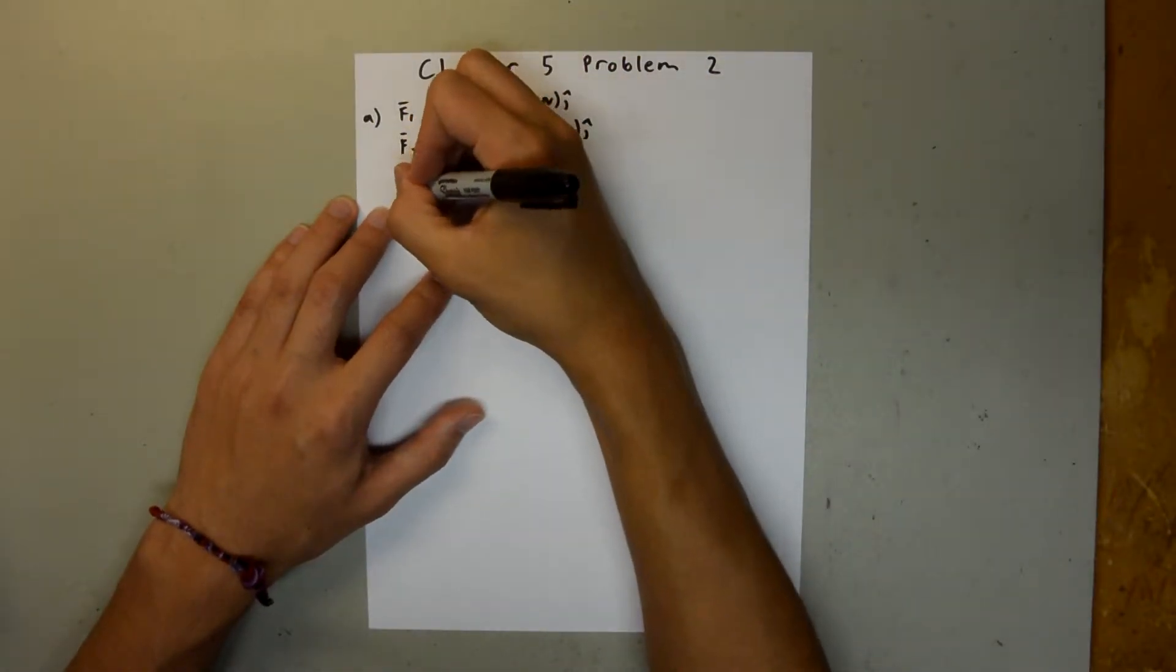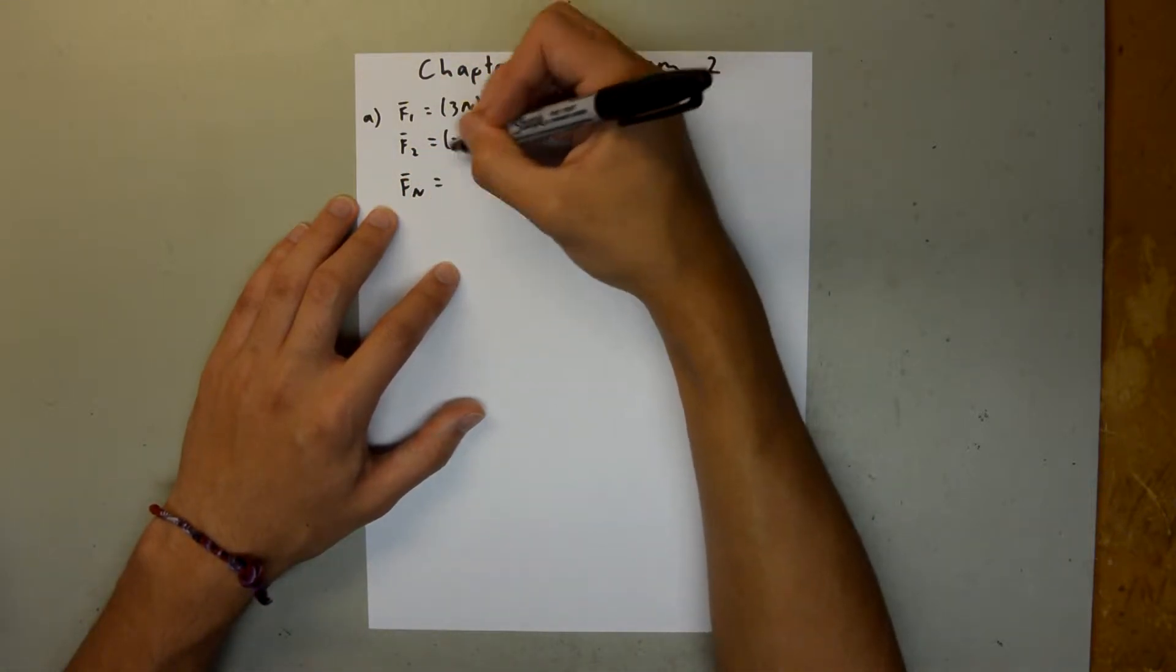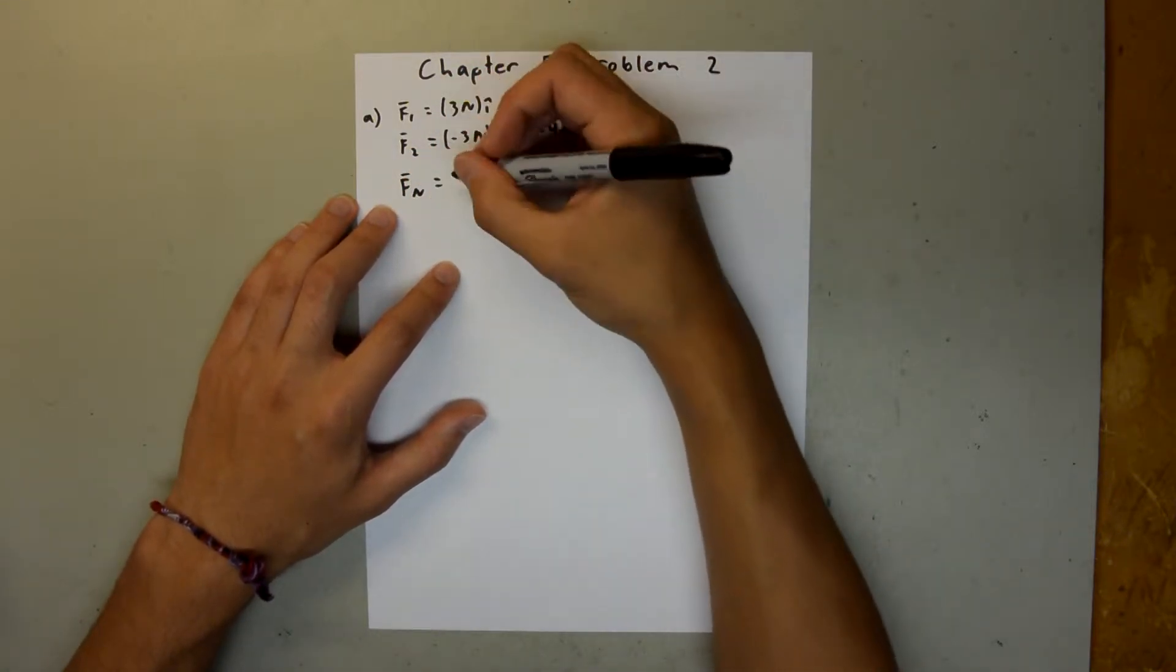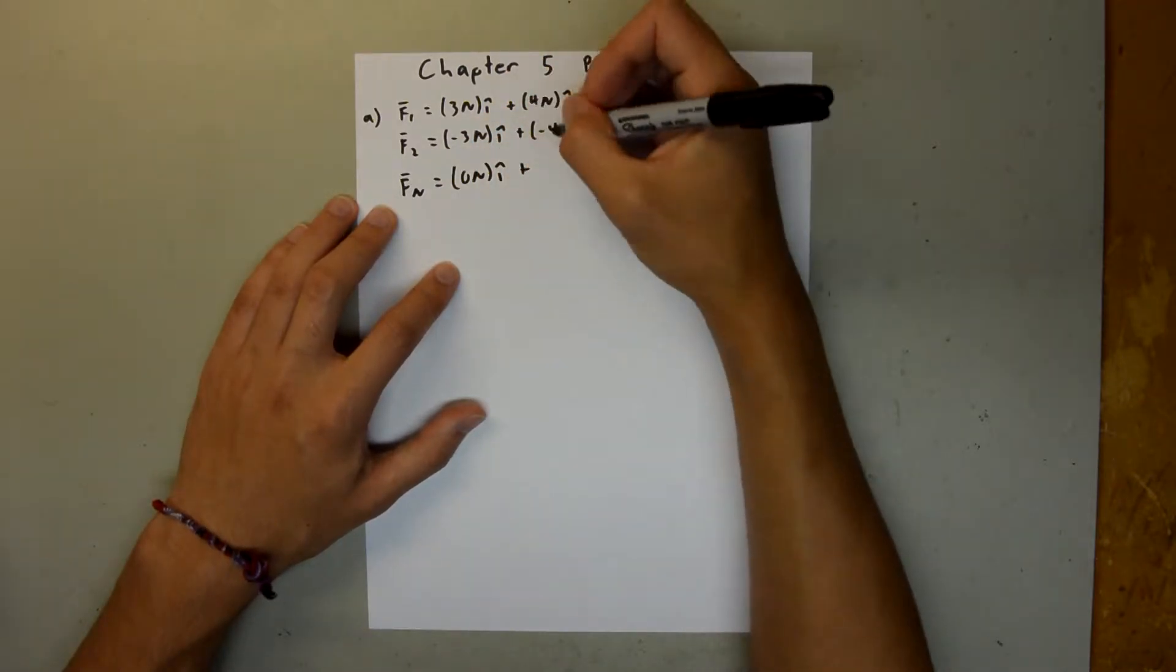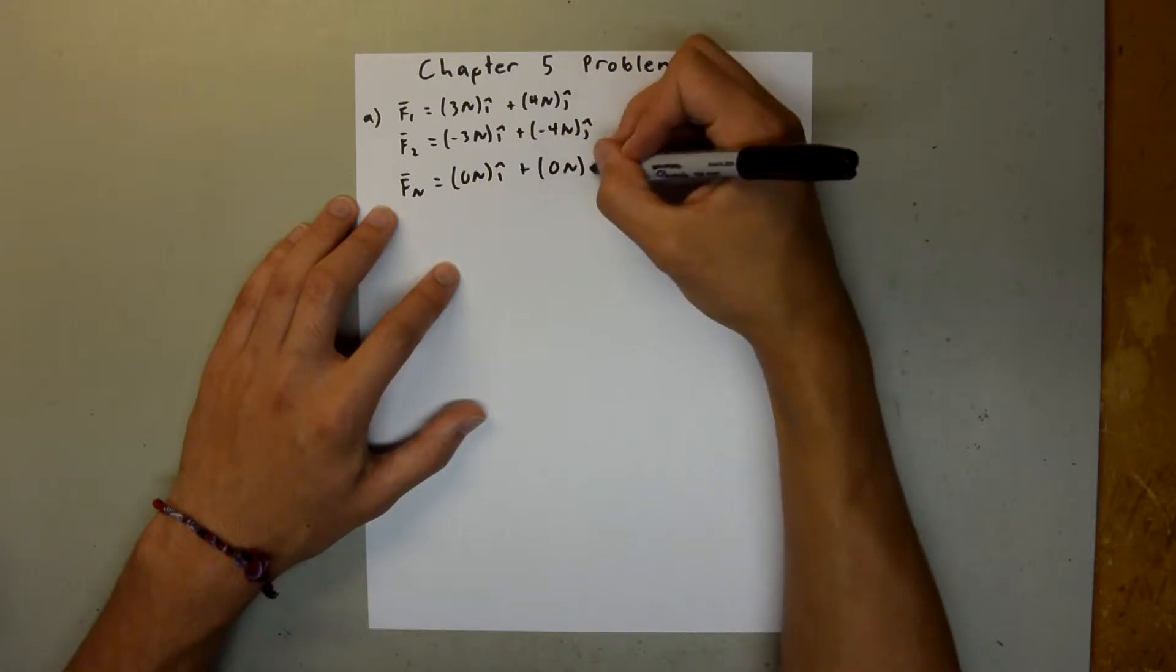So, our net force is going to be just the addition of the components. So, 3 minus 3 is 0 newtons i-hat, and 4 minus 4 is 0 newtons j-hat.